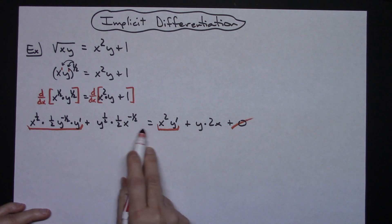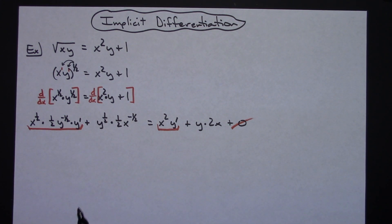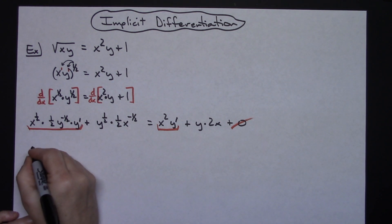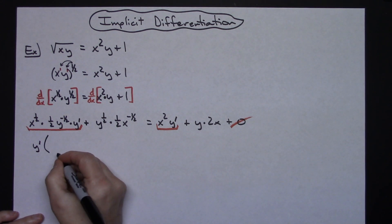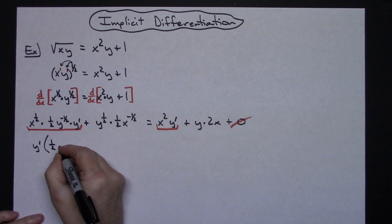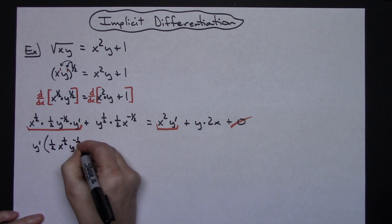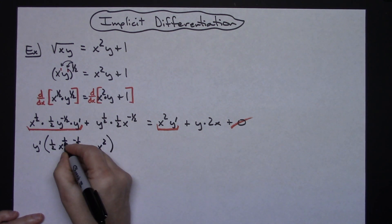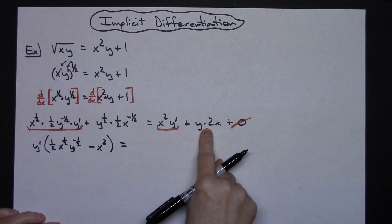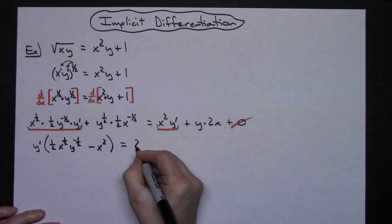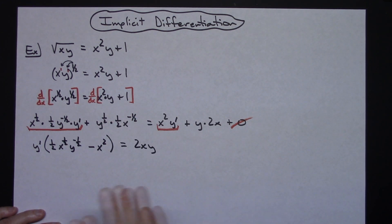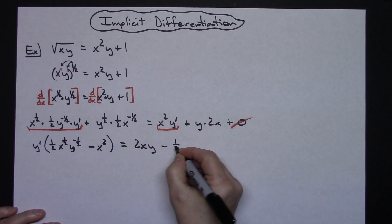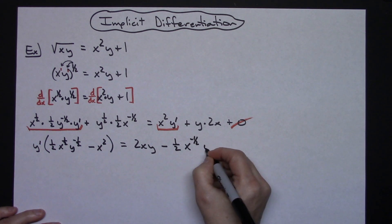This term and this term need to be on the left hand side of my equal sign. When I move the other term over, it'll become a negative, and I'll clean it up. I'll factor out the y prime, which will leave me with 1 half x to the 1 half, y to the negative 1 half, minus x squared. This term on the right stays and I'll rewrite it as 2xy. The term being moved over becomes minus 1 half, x to the negative 1 half, y to the 1 half.